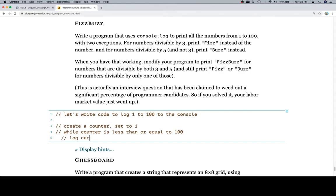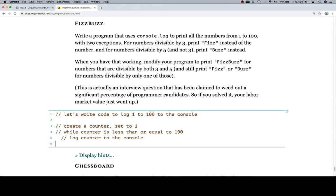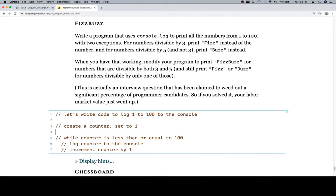And then, while counter is less than or equal to 100, log counter to the console. And then, increment counter by 1. So if we think about this, this is about as simple as while loops get. We know where it's going to start. We know where it's going to stop. It's just going to go up by 1 each time. So let's go ahead and code this out.